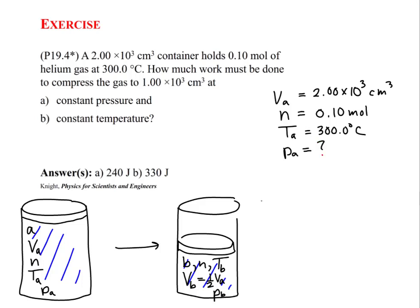Even though the problem didn't specify a pressure at point A, because pressure is a thermodynamic state variable and we are dealing with a gas, it's important to indicate what we know and what we don't. For state B, we have the volume in state B, which compressed down to 1000 cubic centimeters. The number of moles remains the same. Temperature at point B is unknown — that will depend on the process. And pressure at point B is also unknown.